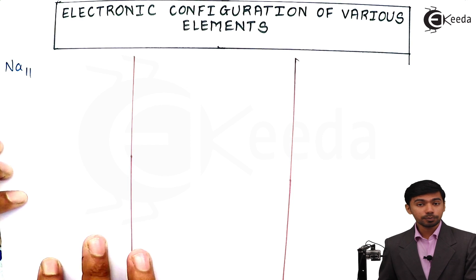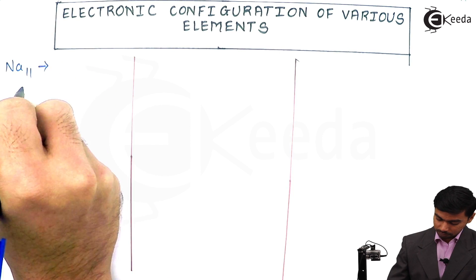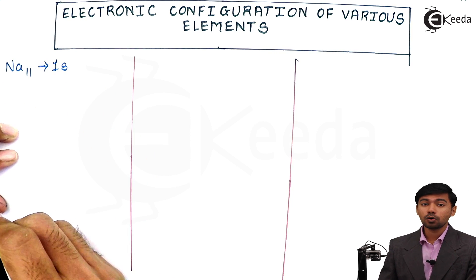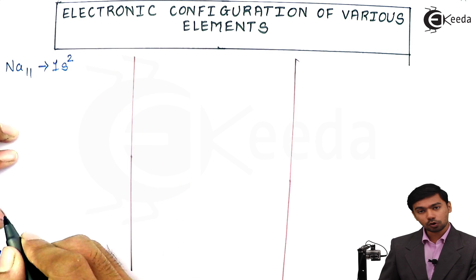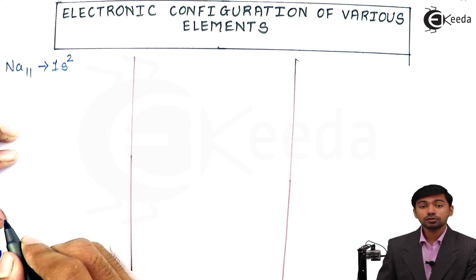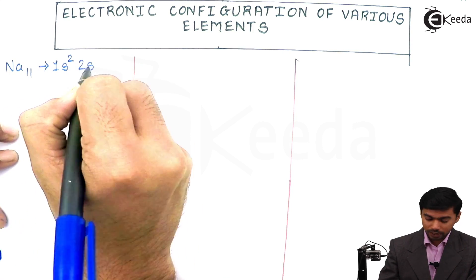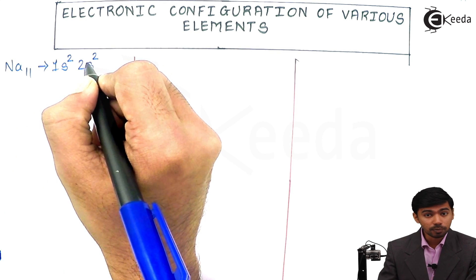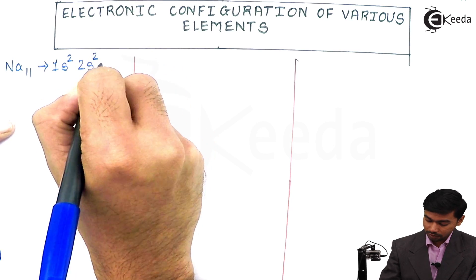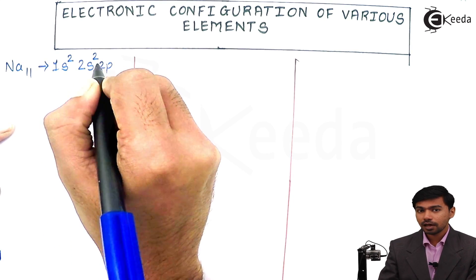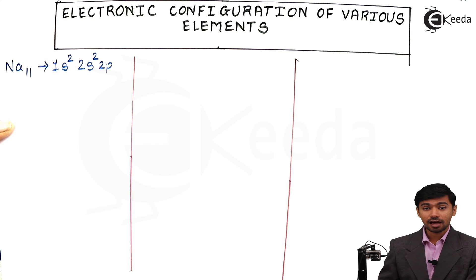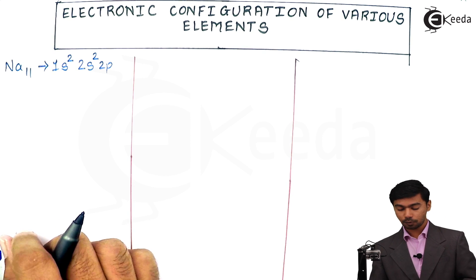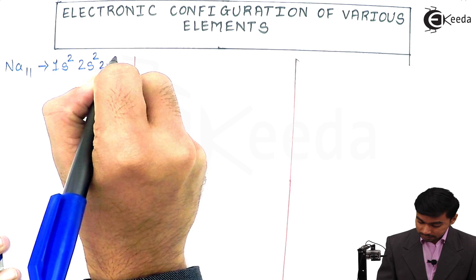According to the Aufbau principle, the first subshell is 1s. The capacity of the s subshell is only 2 electrons, so 1s holds 2. After 1s comes 2s, which also has a capacity of 2 electrons. After 2s comes 2p. The p subshell has 3 orbitals, each containing 2 electrons, so p can hold a maximum of 6 electrons.